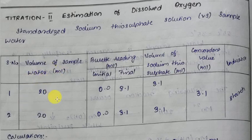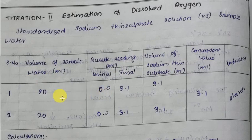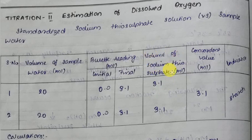Titrate until the endpoint changes from dark blue to colorless. The initial burette reading is 0.0 and the final reading is 3.1 ml, so the volume of sodium thiosulfate consumed is 3.1 ml. The concordant value is 3.1 ml. Sometimes the value may be 7 ml or 8 ml depending on the dissolved oxygen content.